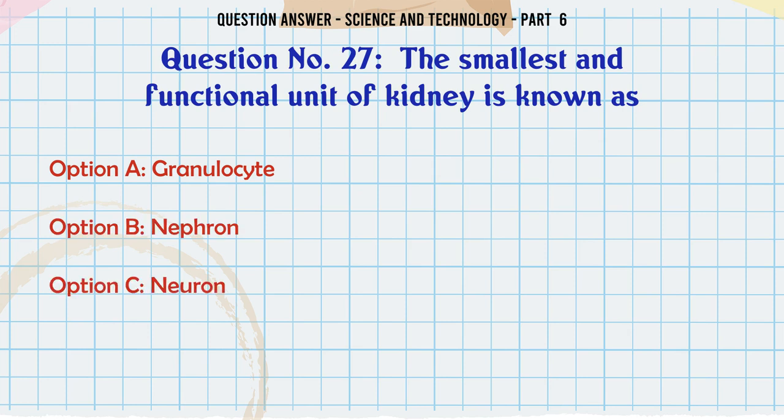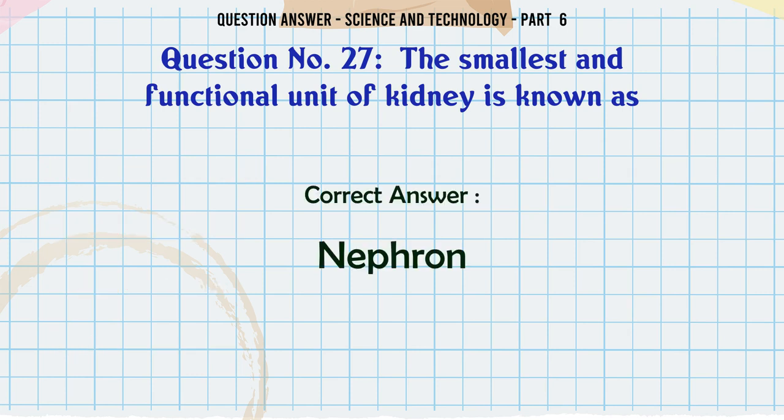The smallest and functional unit of kidney is known as. A. Granulocyte. B. Nephron. C. Neuron. D. Granule. The correct answer is Nephron.